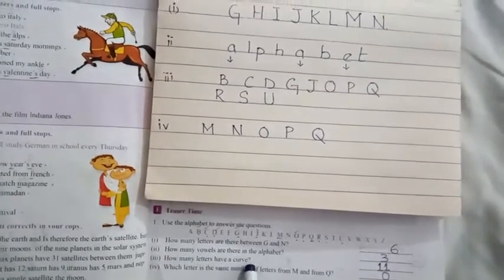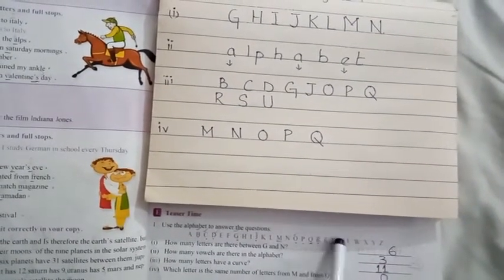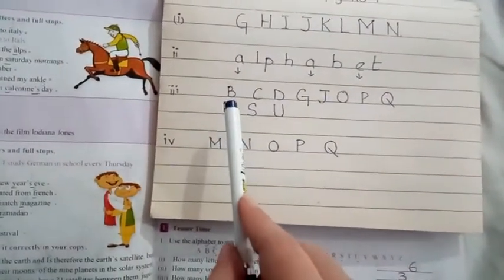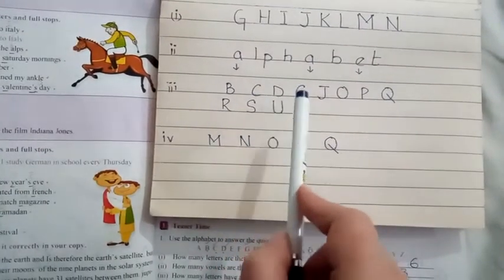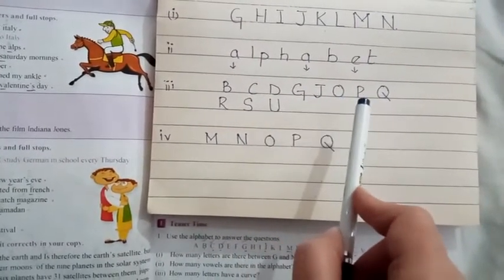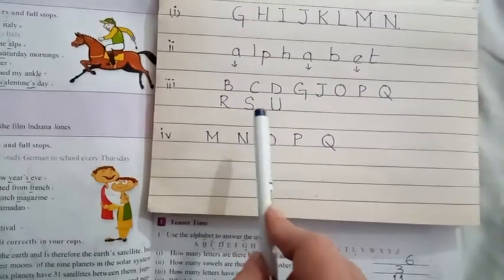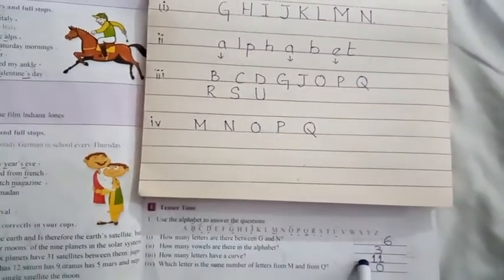How many letters have a curve? So in your alphabets, how many letters have a curve? So B C D G J O P Q R S and U. So 11 in total have a curve.